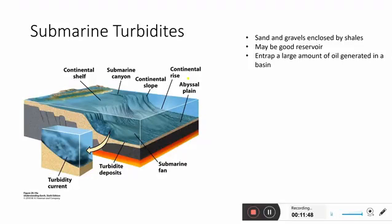Here is another example: submarine turbidites, which are very important for petroleum exploration. There are examples worldwide where good oil and gas reservoirs were found in these marine environments. Submarine fans play a role in depositing turbidites, which mostly consist of sand and gravels enclosed by shales. At some locations they may be good reservoirs that can entrap a large amount of oil generated in the basin.